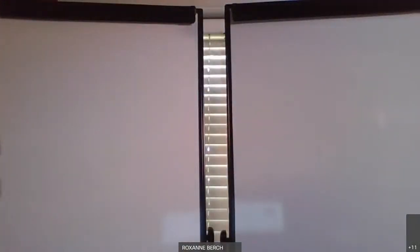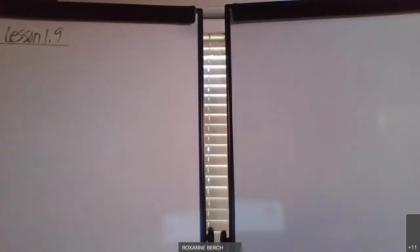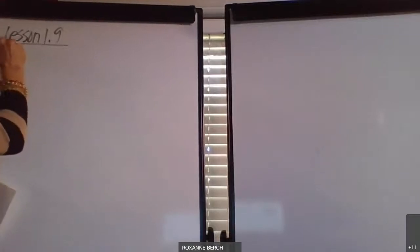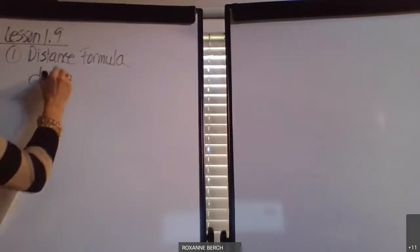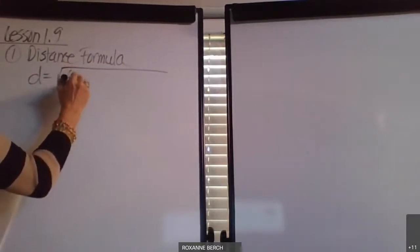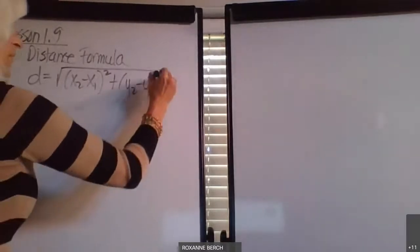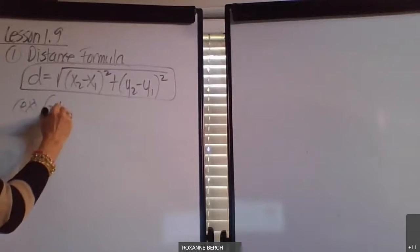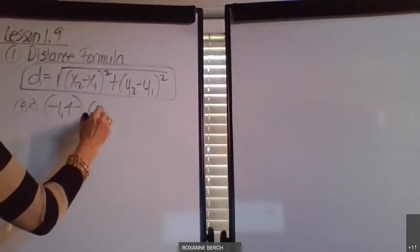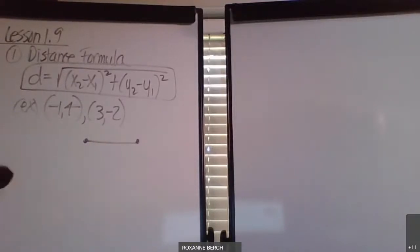Now let's start Lesson 1.9. There are five objectives and I'm going to teach them all right now. This lesson is easier than some of the lessons we've done recently. The first objective is the distance formula.